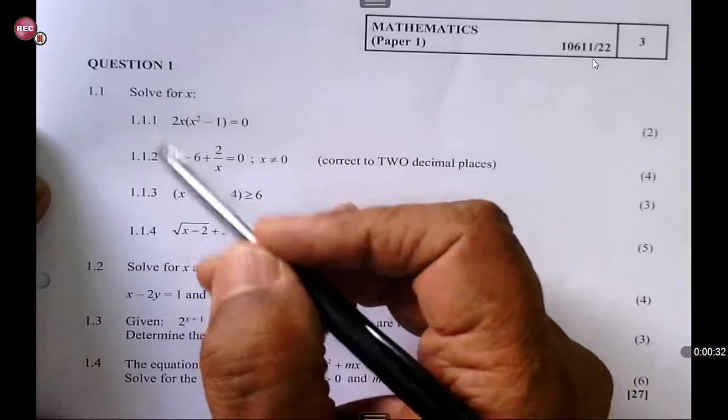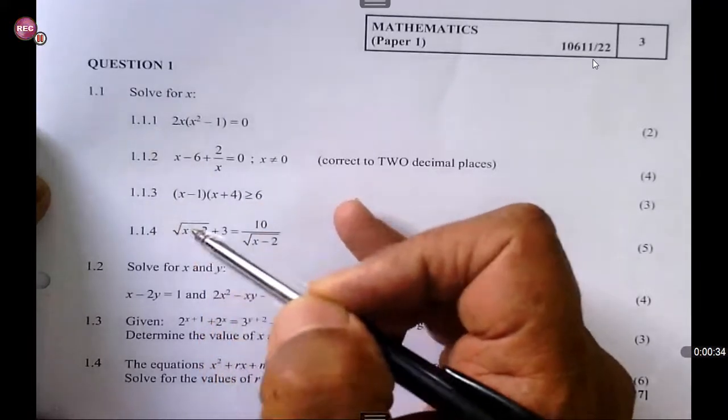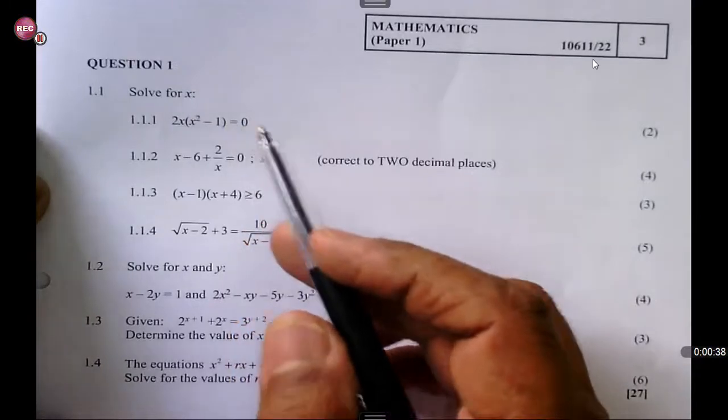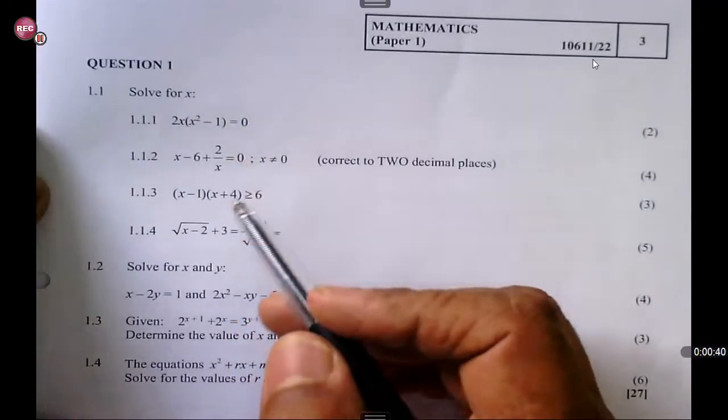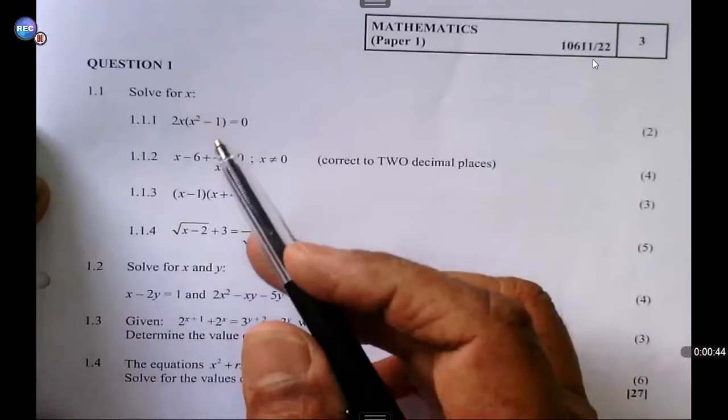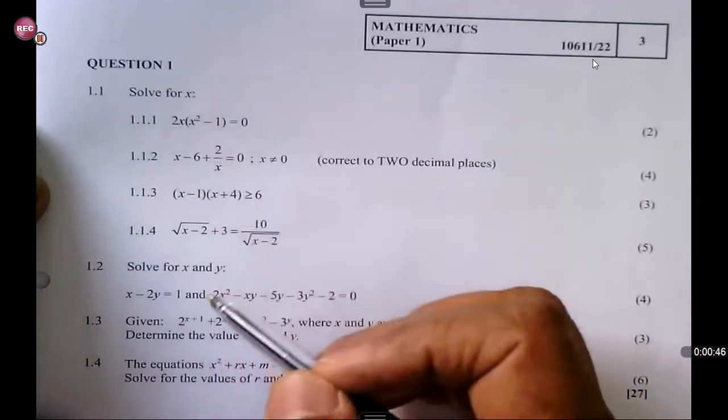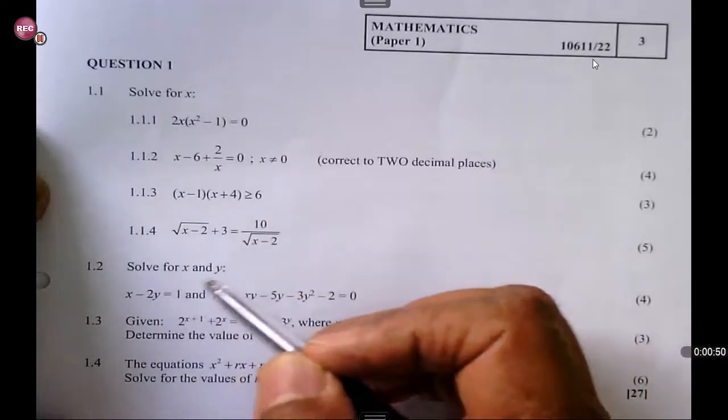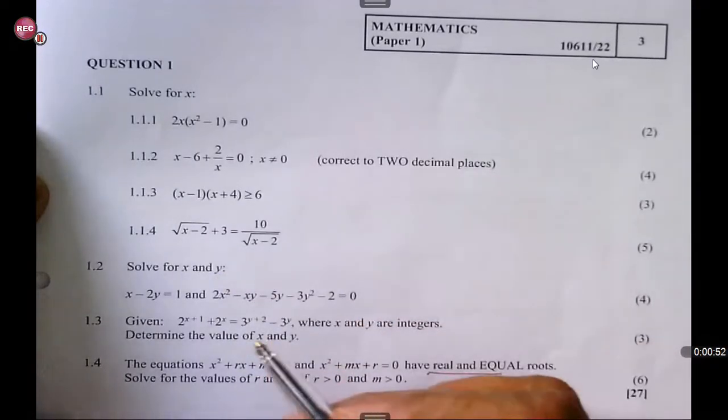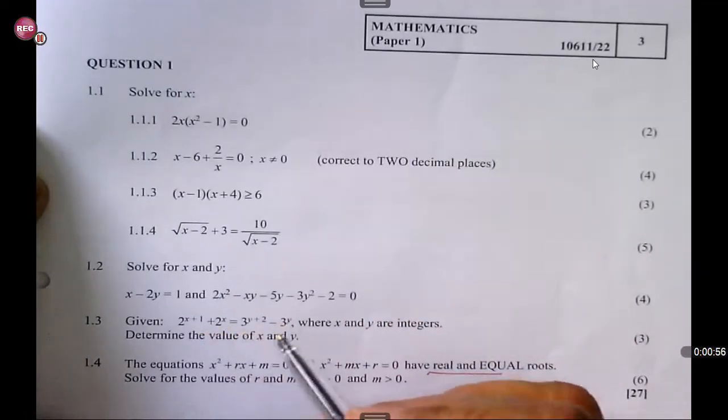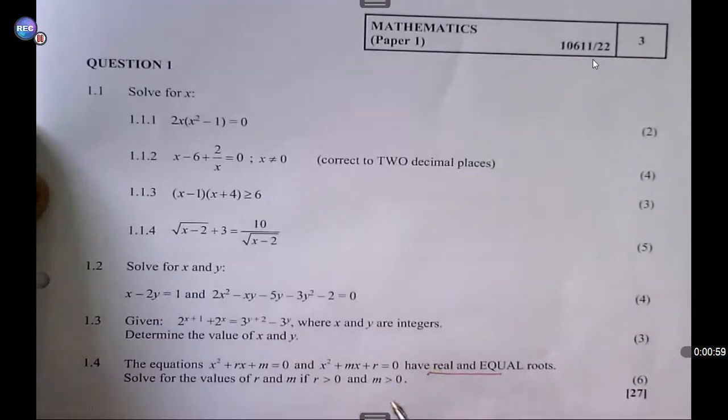Well, in fact, for all four you must solve for x. There is your quadratic equation, a fraction, inequality, and surds. So those are the first four where you must solve for x. Then you must solve for x and y, simultaneous equations, and then of course equations based on exponents and then one based on the nature of the roots.